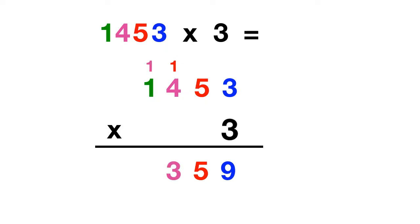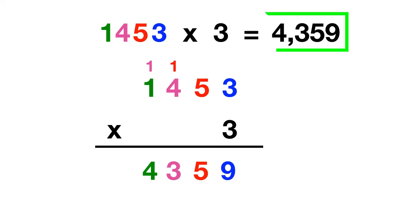Finally we can multiply 3 times this 1000. 3 times 1 is 3, and then we add in the regrouped 1 to get 4. So 1453 times 3 equals 4359.